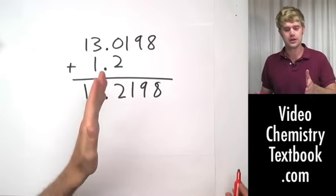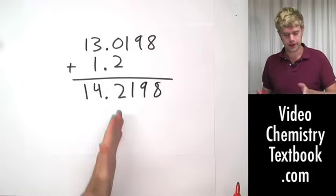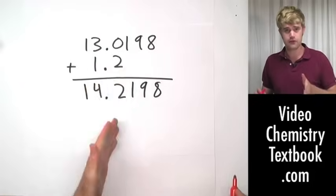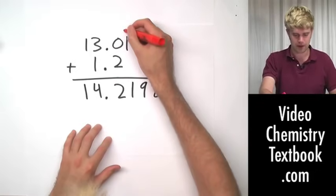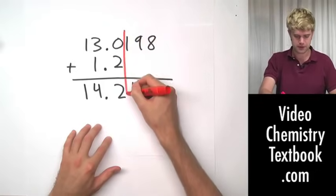That means that my final answer can only have one decimal place too. I find it easy to draw a line vertically just to the side of the number with the fewest number of decimal places. So right here, right next to the two, just like that.